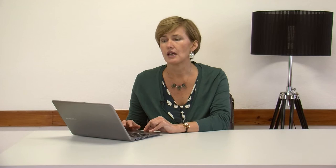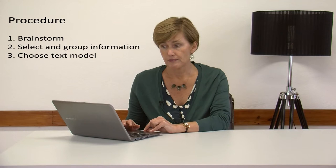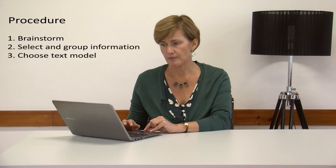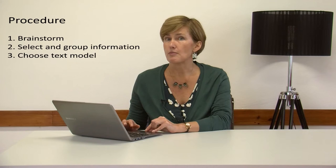Now we can move on to the third stage in the planning process, which is to choose the text model that best lends itself to the material that we have here. There are a variety of different models available, and the most important ones are described in reference file 6. In this case we could perhaps choose a simple list model, which could be used either just to give the information or to give information and then briefly evaluate it. Alternatively, we might prefer the discursive model, which would enable us to assess the benefits and the drawbacks of the Bologna process more effectively.